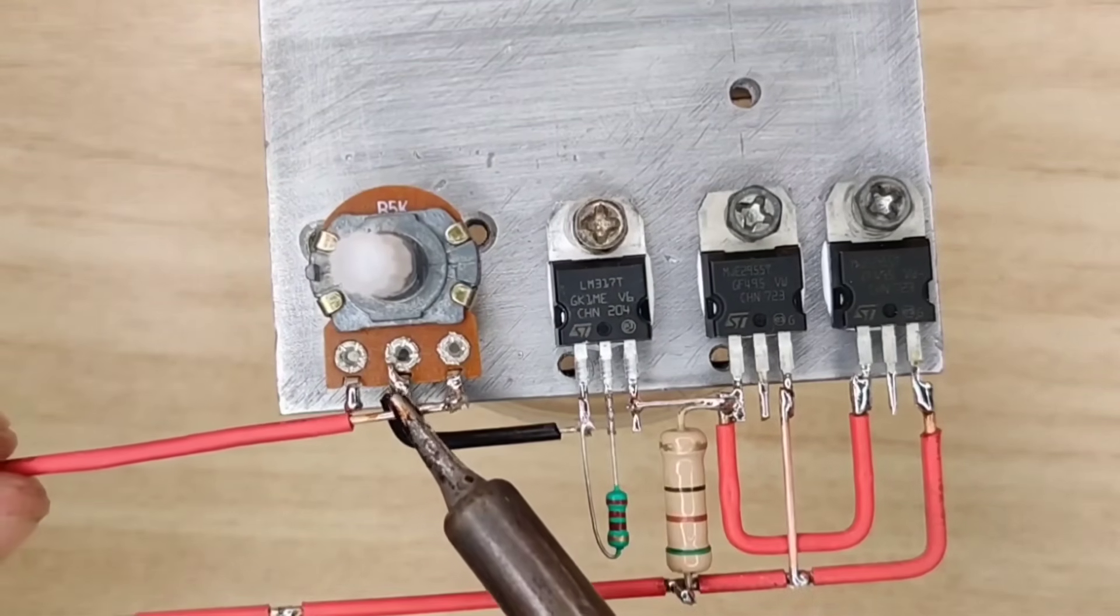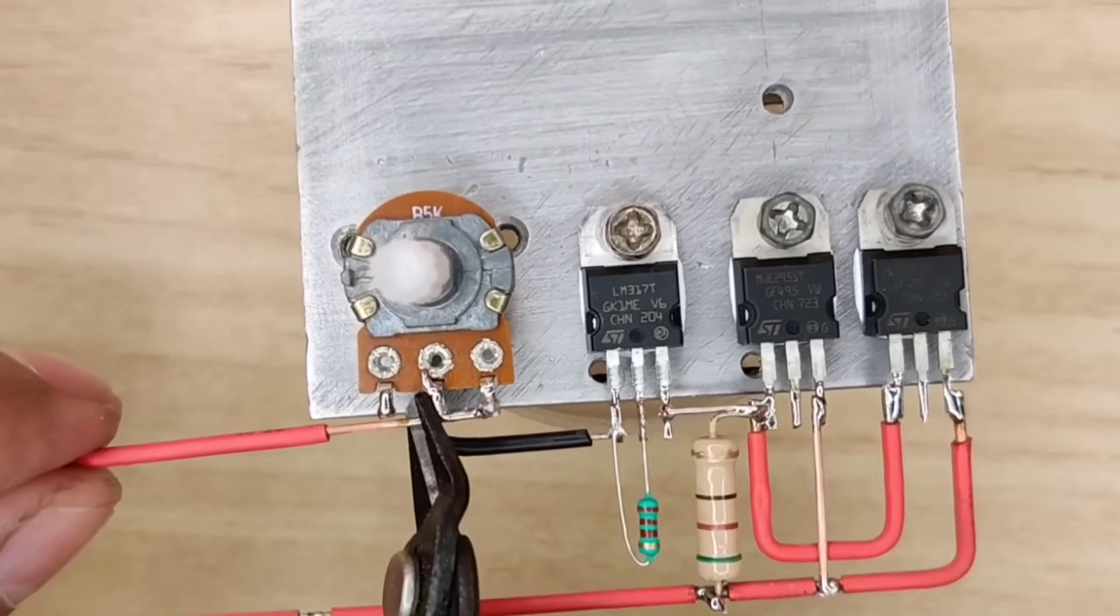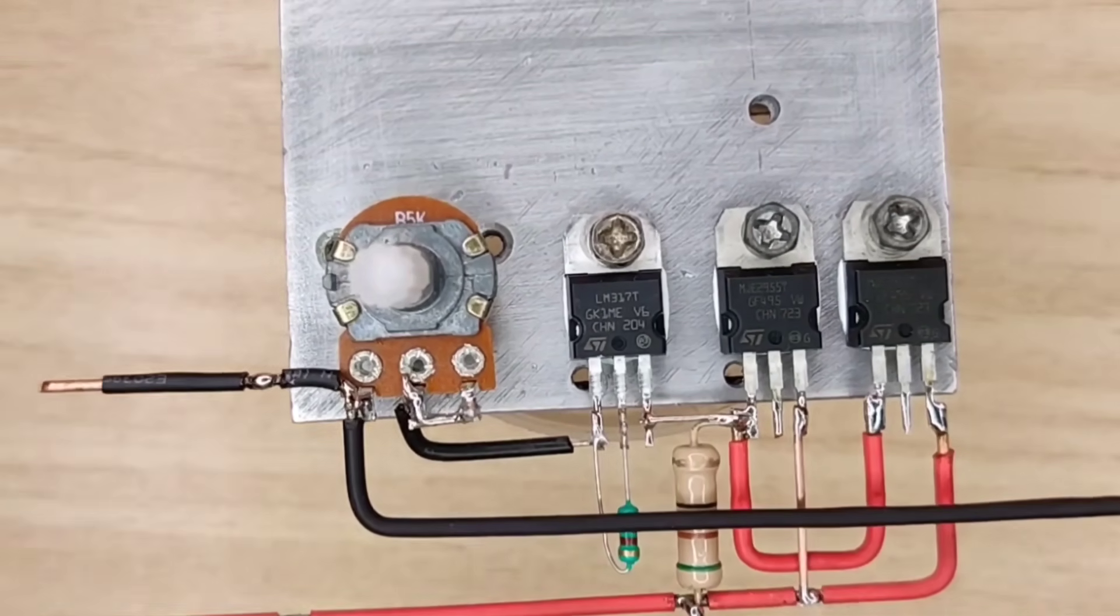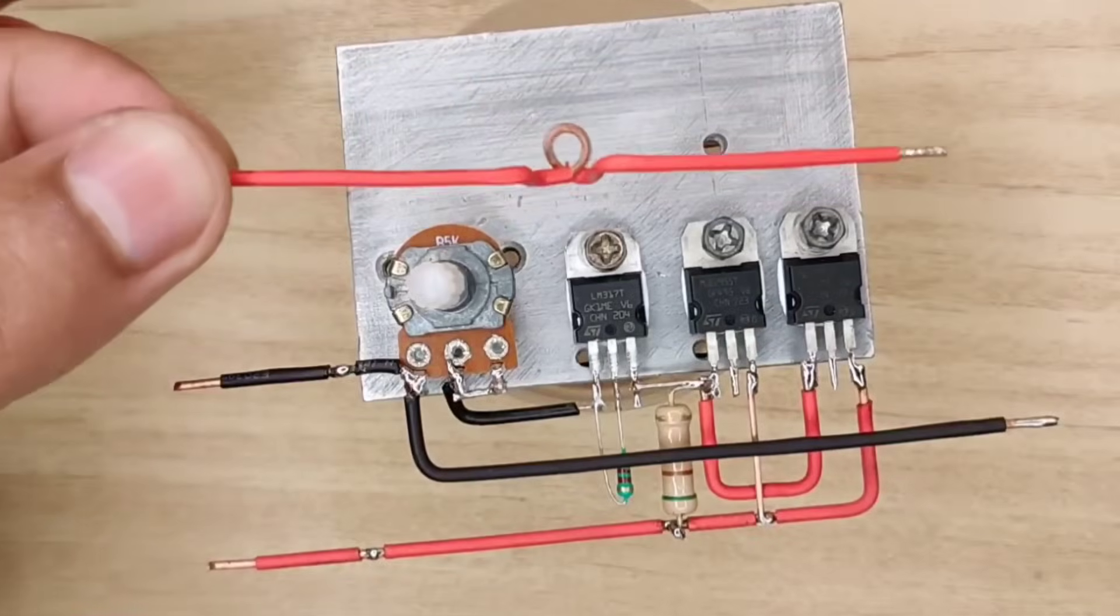Also connect pin 2 and 3 of the potentiometer together. Now solder copper wire with pin 1 of potentiometer, and also connect copper wire with the surface of the heatsink.